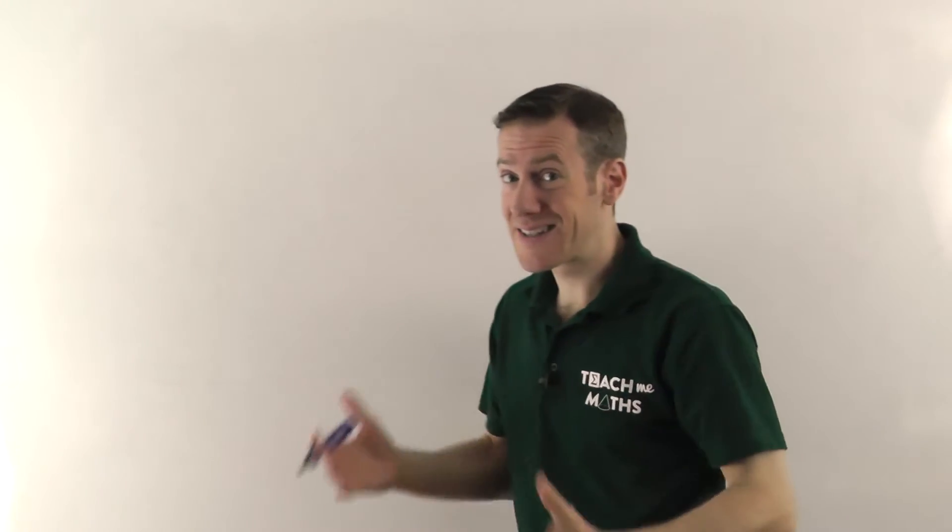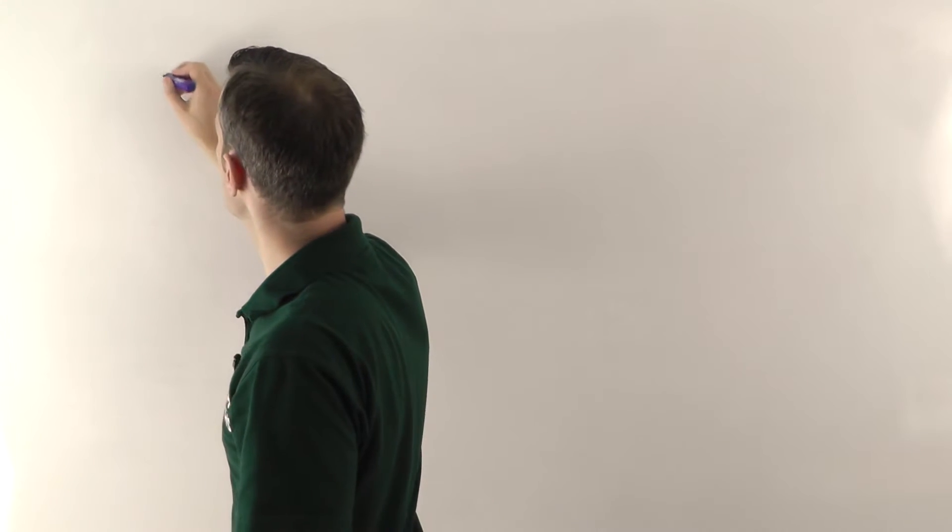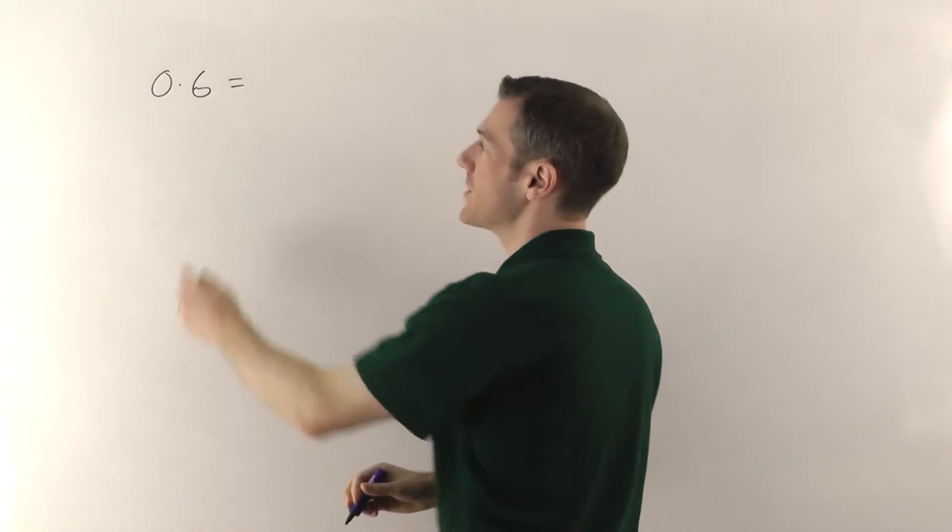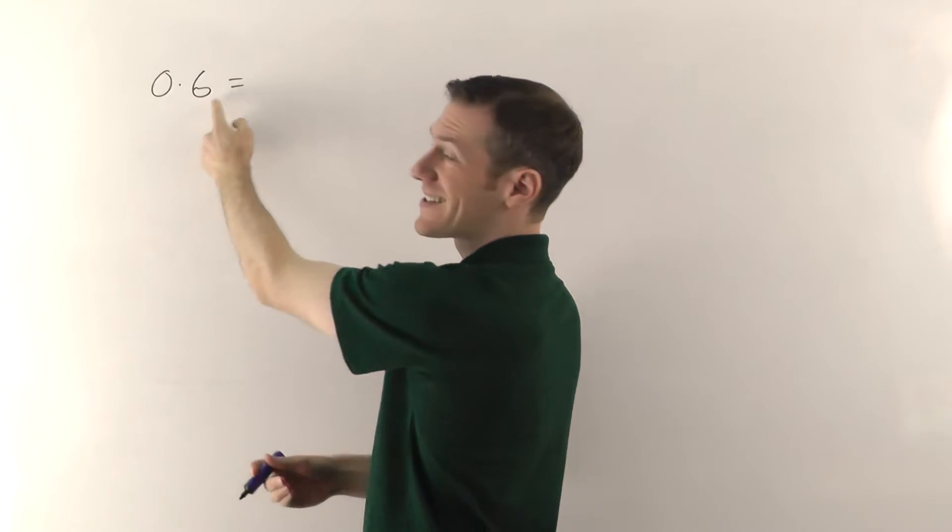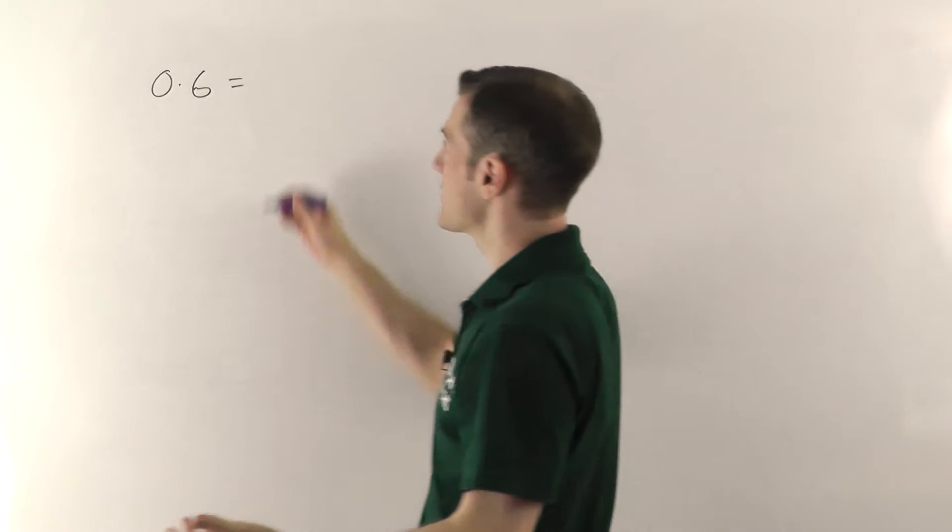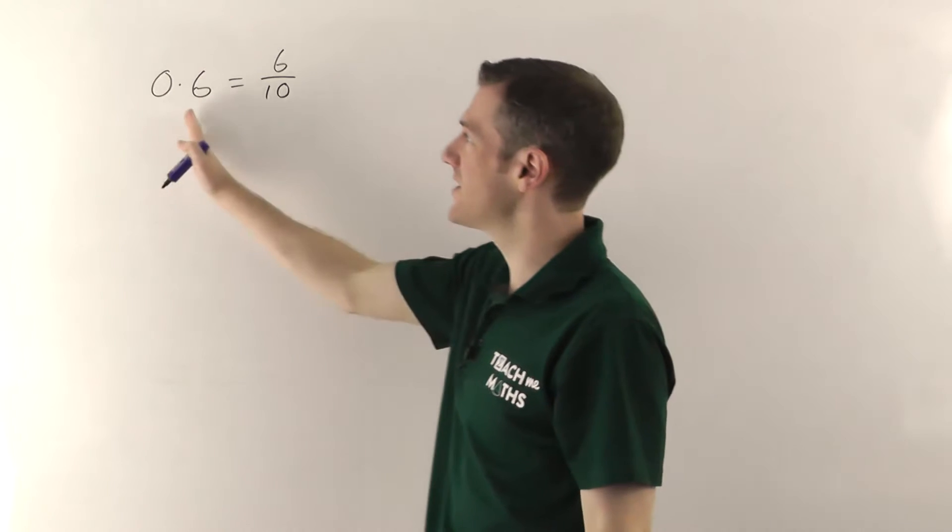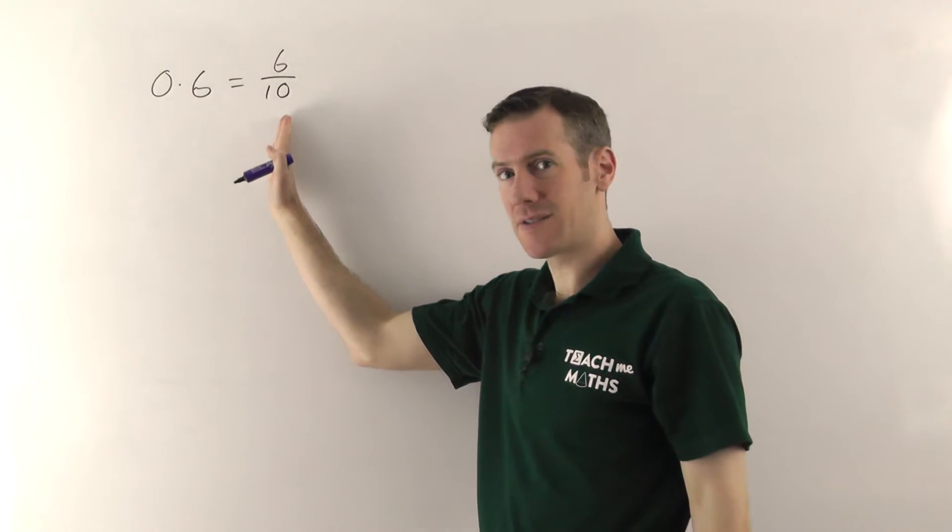Well, we go back to the definition of what a decimal is. So if you have 0.6, for example, by definition that means you've got no units and 6 tenths. So as a fraction, it's 6 tenths. That's it. If you know what a decimal is, it's easy to write it as a fraction.